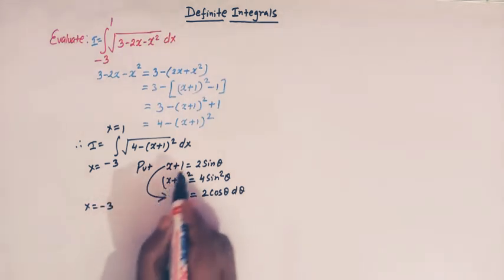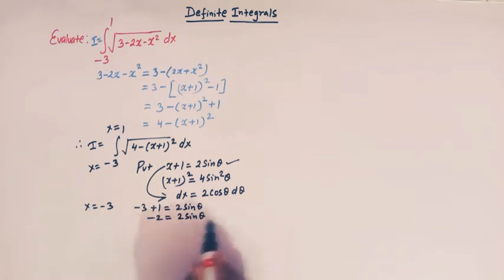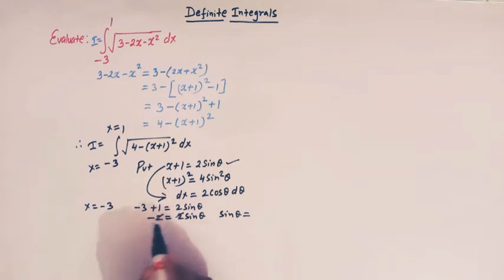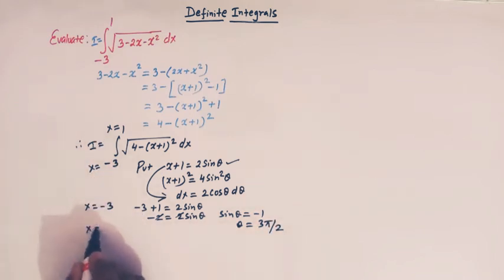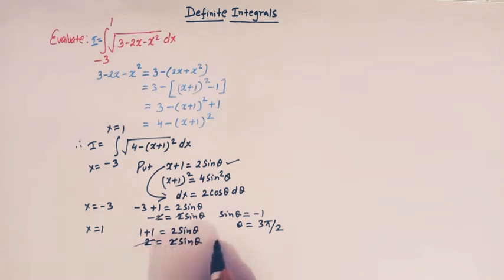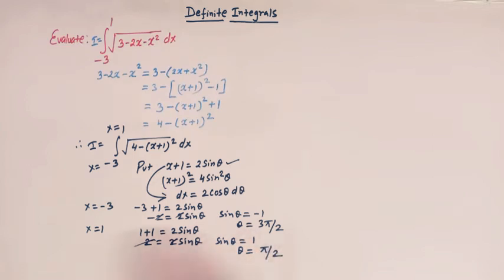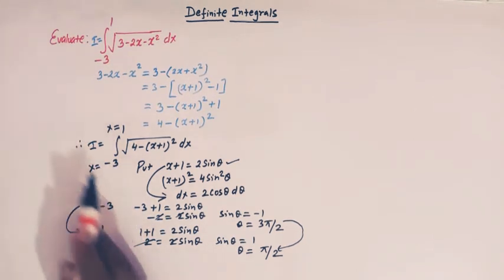When x = -3, we have -3 + 1 = 2sinθ, so -2 = 2sinθ, giving sinθ = -1, and therefore θ = 3π/2. When x = 1, we have 1 + 1 = 2sinθ, so 2 = 2sinθ, giving sinθ = 1, and therefore θ = π/2. So when x varies from -3 to 1, θ varies from 3π/2 to π/2.